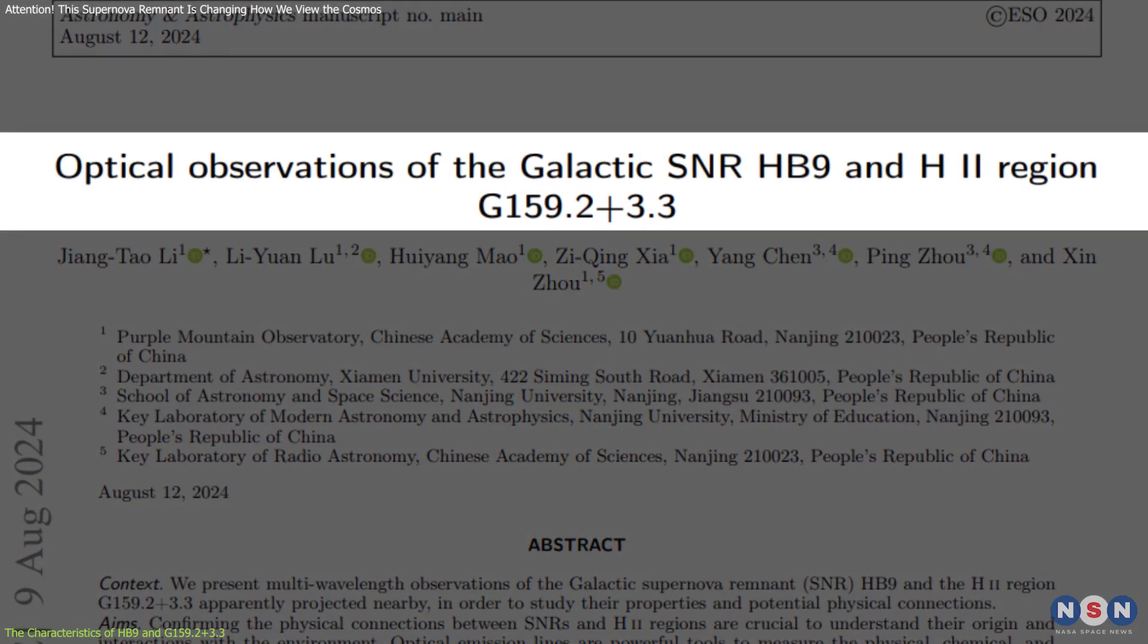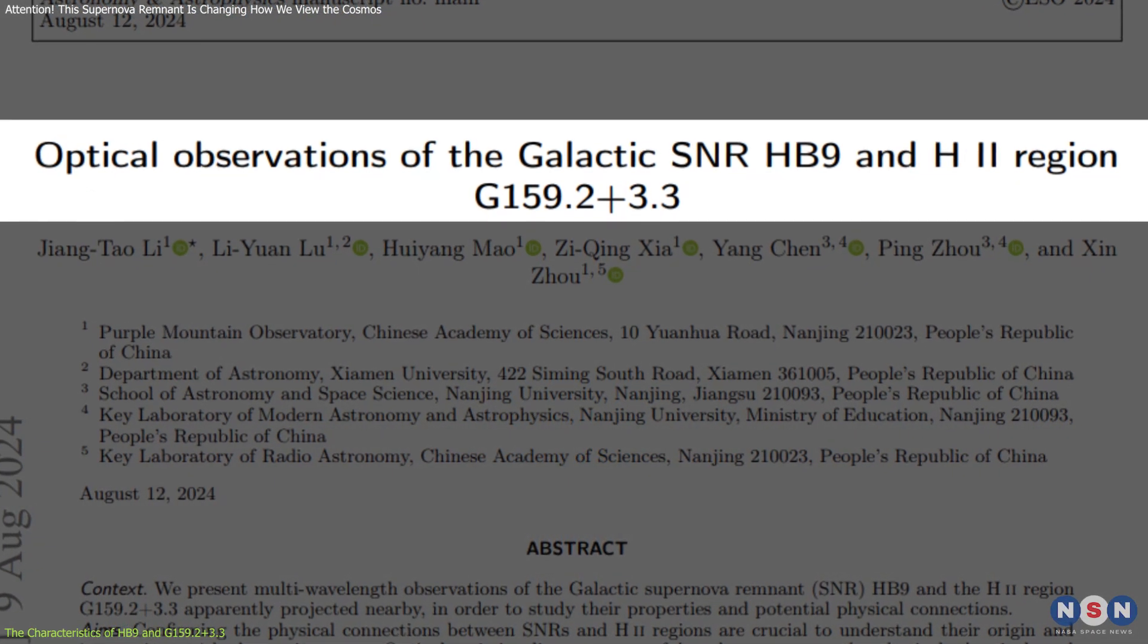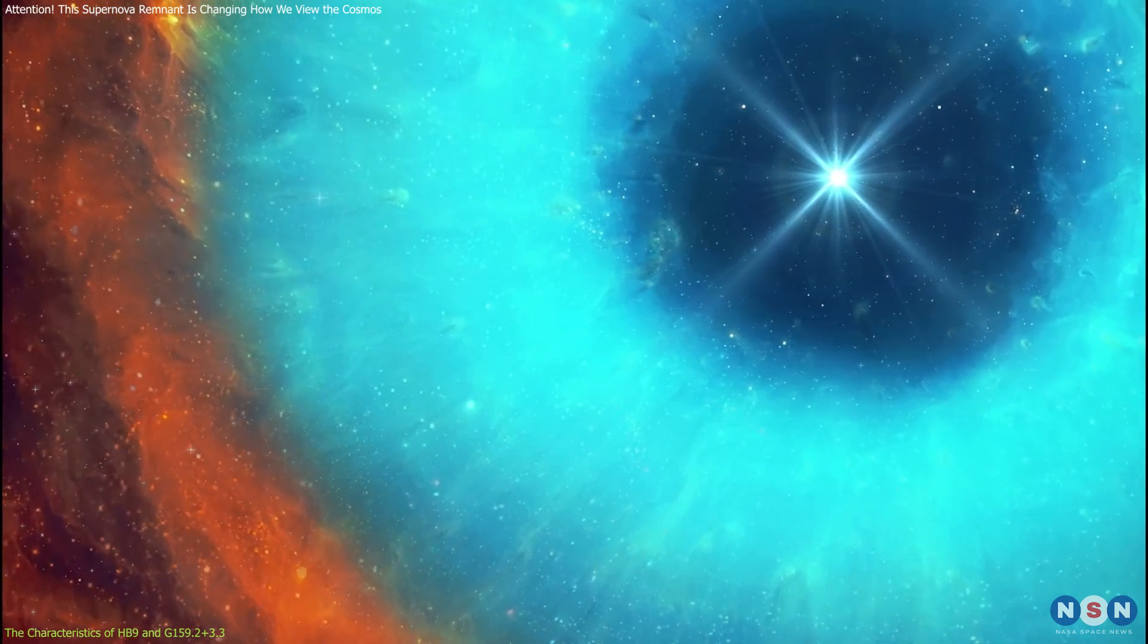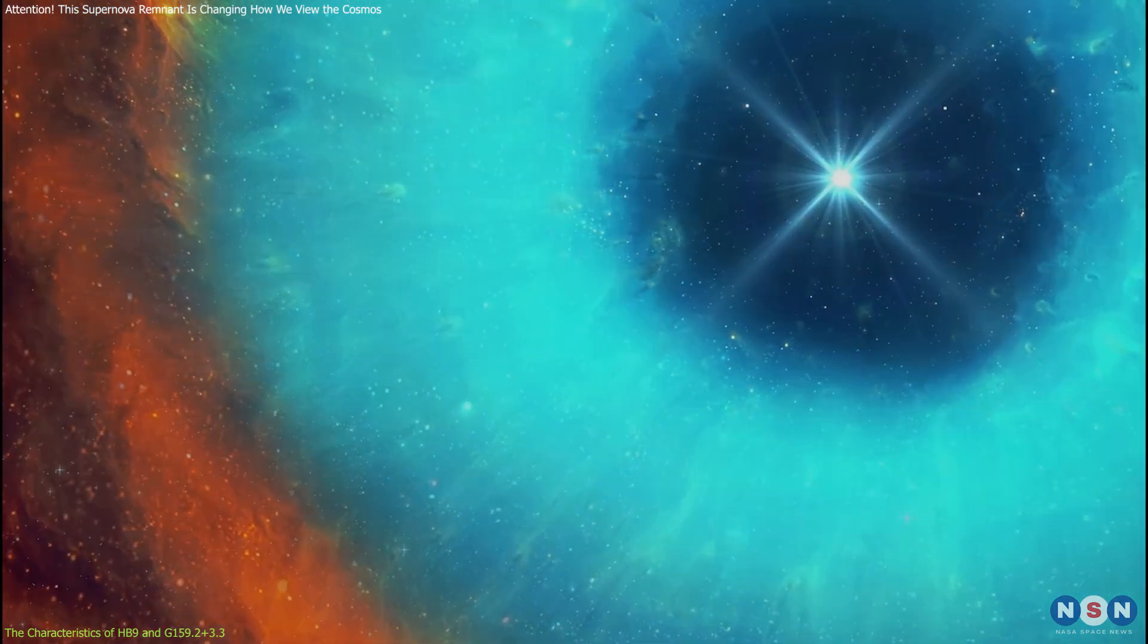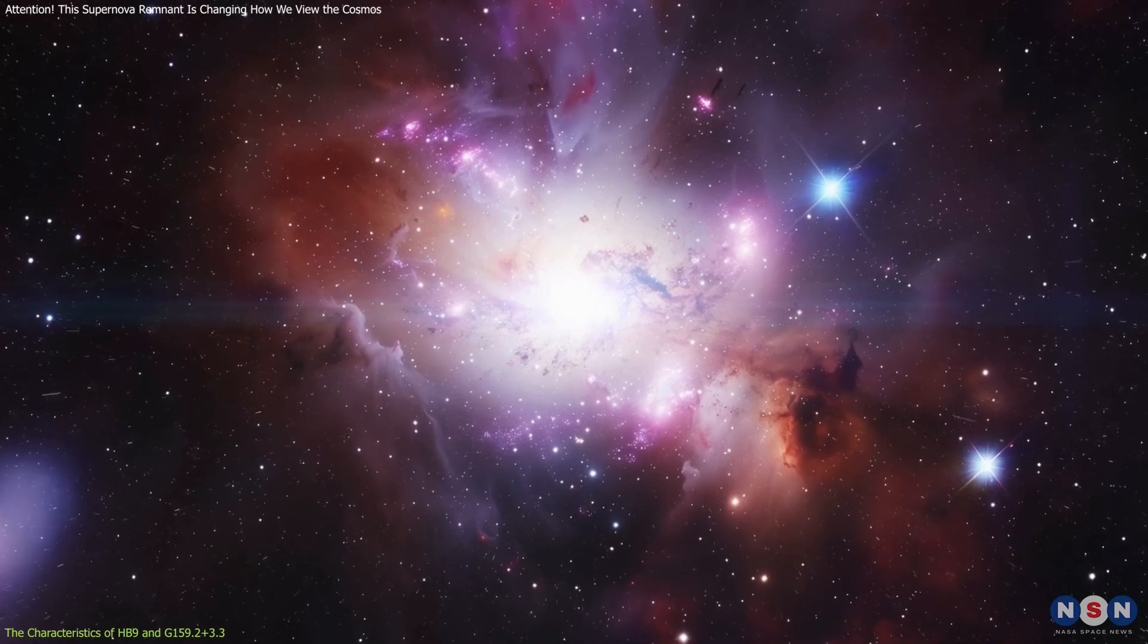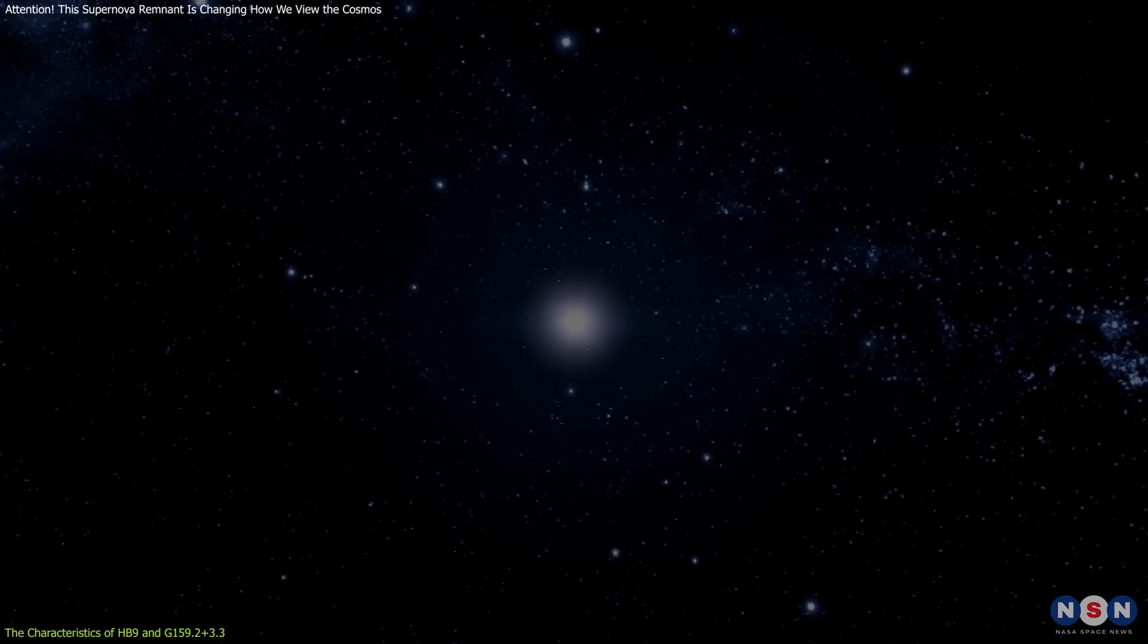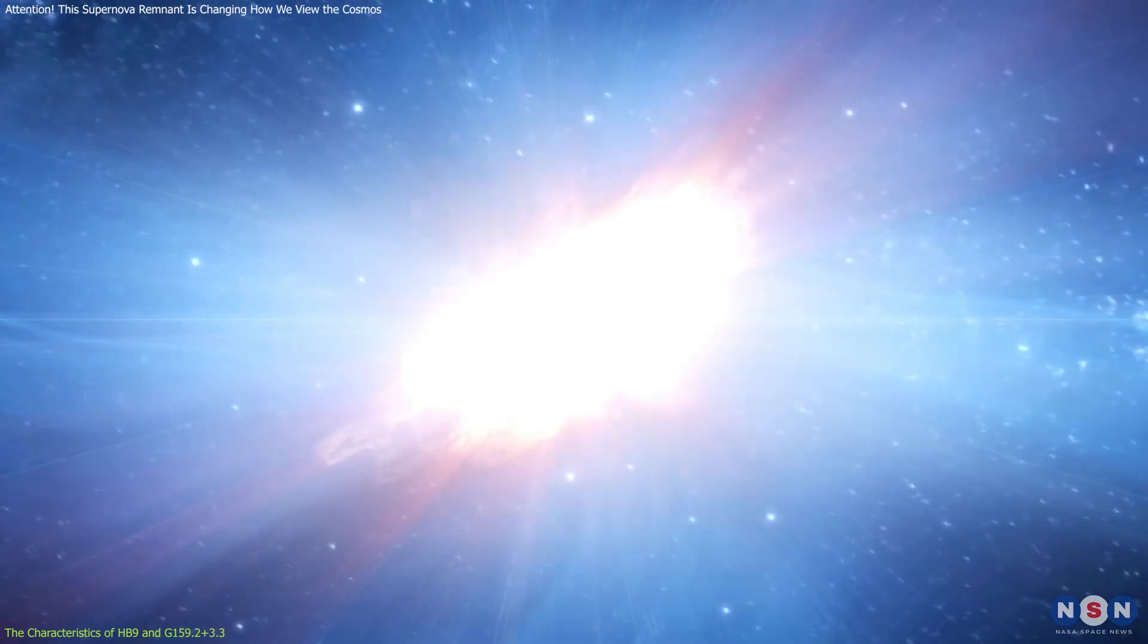The idea that Hb9 and this region might be physically linked is rooted in how stars and their remnants interact with the interstellar medium. Massive stars form within giant molecular clouds, which are often accompanied by H2 regions. When these stars go supernova, they leave behind remnants like Hb9.